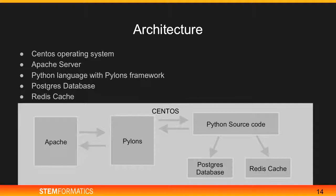This is how our architecture looks. We have a CentOS operating system with a reverse proxy Apache server. A user issues a request that goes to Apache, and from Apache it goes to Pylons. In Pylons, it gets routed to a path and source code where the actual logic for adding, removing, or performing any action resides. From there, it talks to either Postgres or Redis cache depending on what it needs to do. The output gets sent back to Pylons, goes to Apache, and is shown to the user.